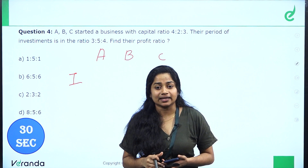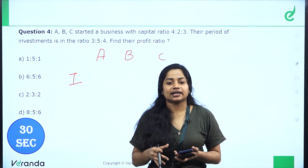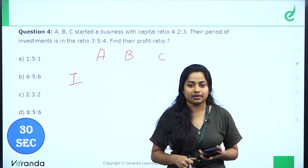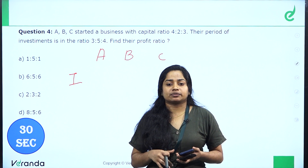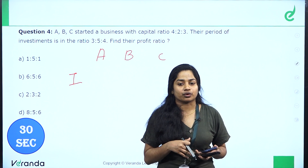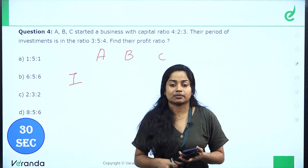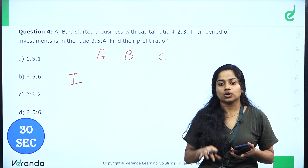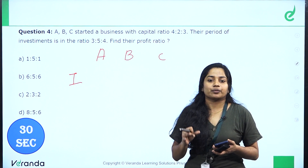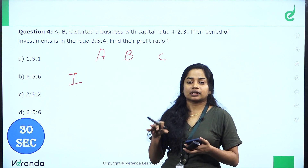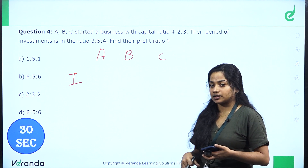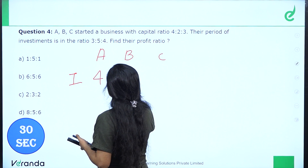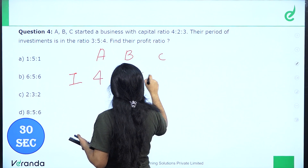30 seconds. ABC started a business with capitals in the ratio of 4 is to 2 is to 3. Their period of investment is in the ratio of 3 is to 5 is to 4. Find their profit ratio. The investment ratio is 4 is to 2 is to 3.